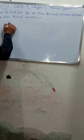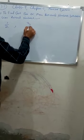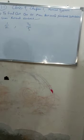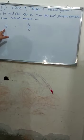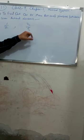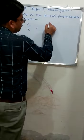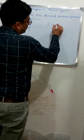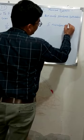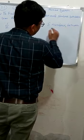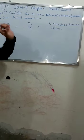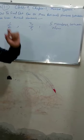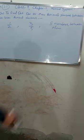Now suppose the fractions given to us are 1 upon 2 and 3 upon 5. What do we observe here? Their denominators are different — the first one has denominator 2 and the second one has denominator 5. The question is: find 5 rational numbers between them. First and foremost, we will make the denominators the same.